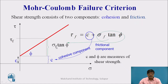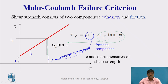In the Mohr-Coulomb equation, two parameters play a very important role for shear strength. The total shear strength tau_f comprises two components: C (the cohesion component) and sigma * tan(phi) (the friction component). Cohesion component and friction component taken together give the shear strength.